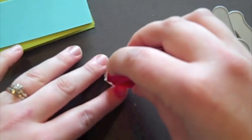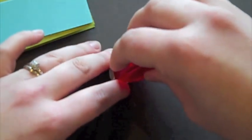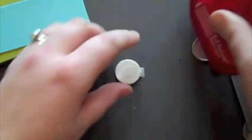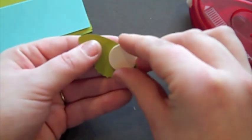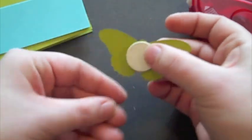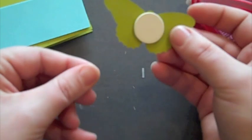Now what you want to do is adhere this large circle to the back of the element that you want to spin, and here I've got a butterfly that I die cut, and I'm just going to adhere that right to the back of the butterfly.